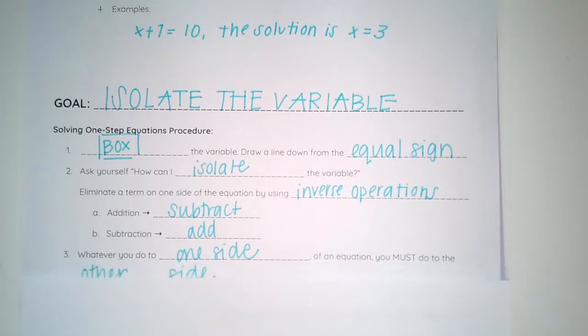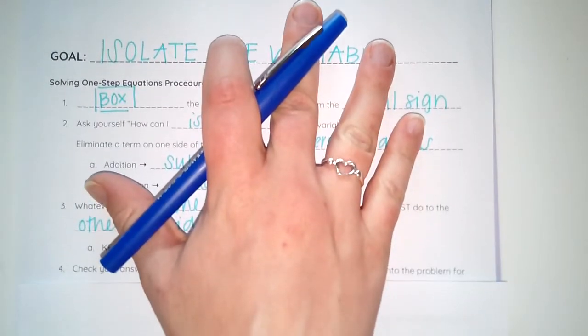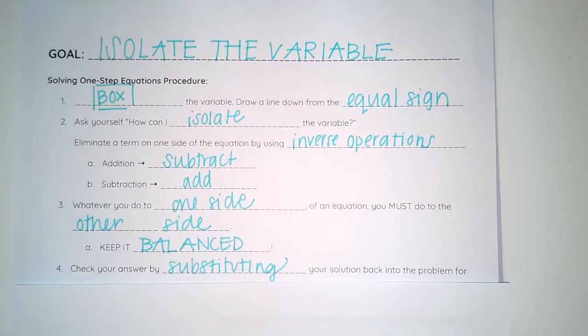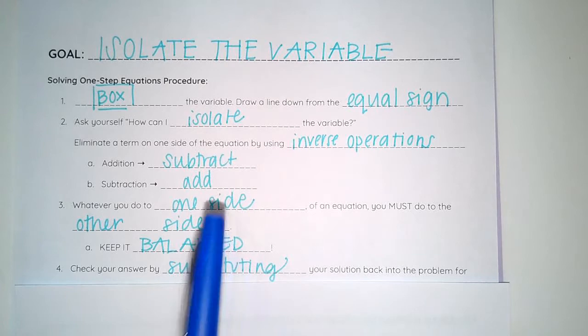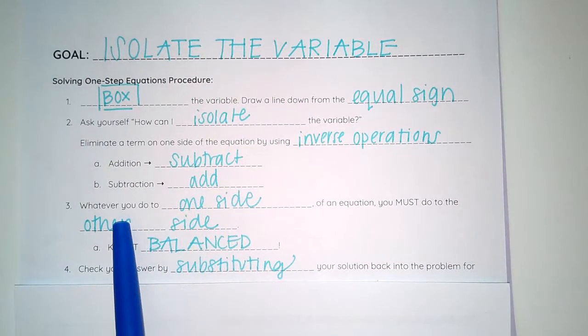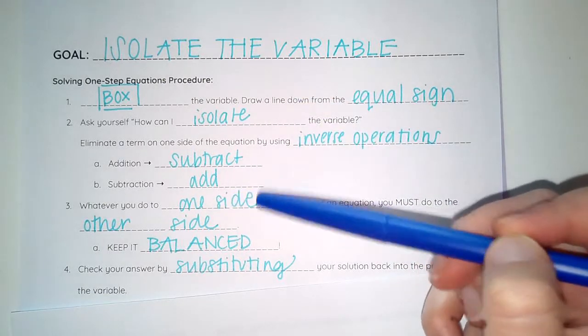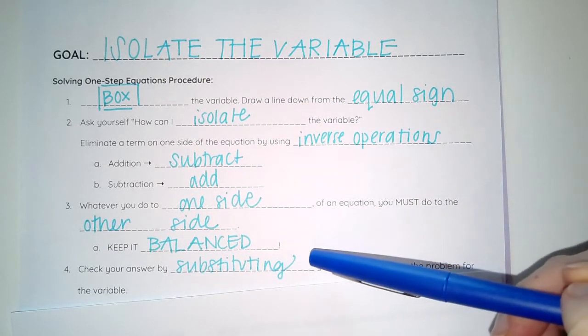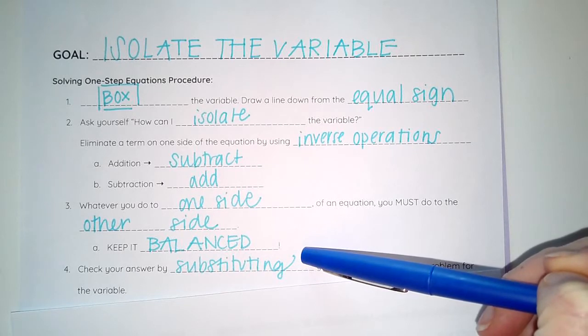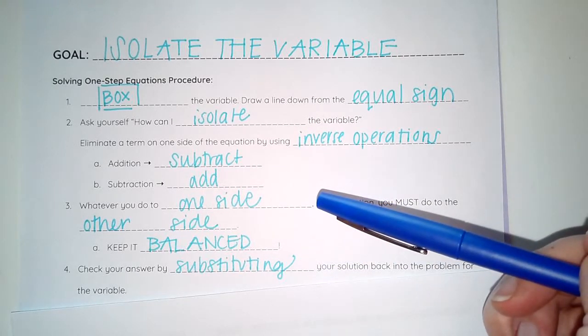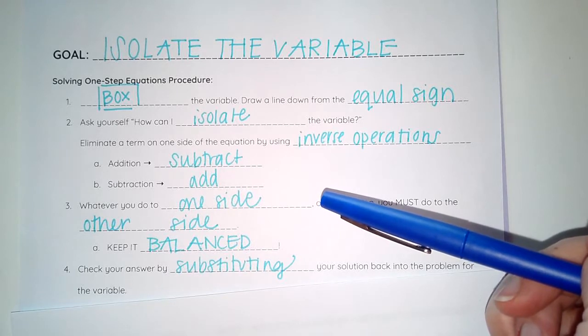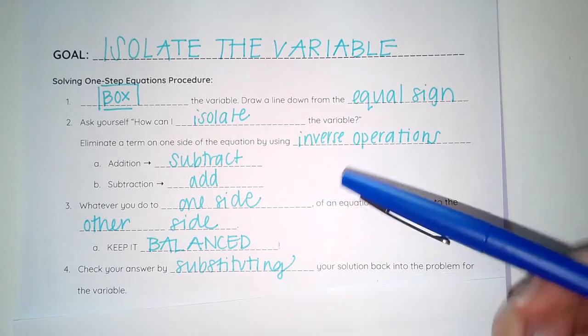Super important to remember step three, whatever you do to one side, you must do to the other side, keeping everything balanced. And that line down from the equal sign will help remind you to do that. And then lastly, we substitute our solution into our original equation to make sure that our answer is correct.